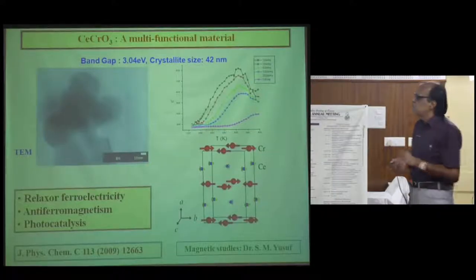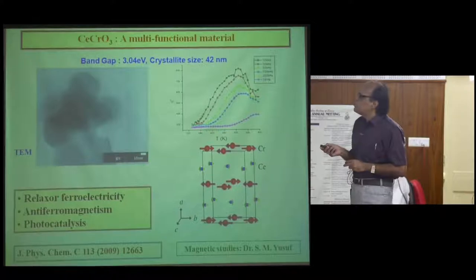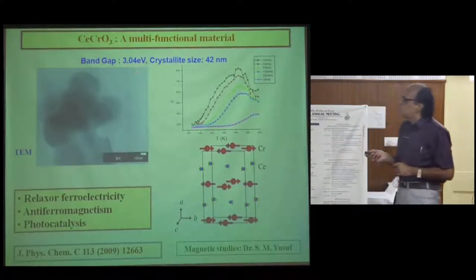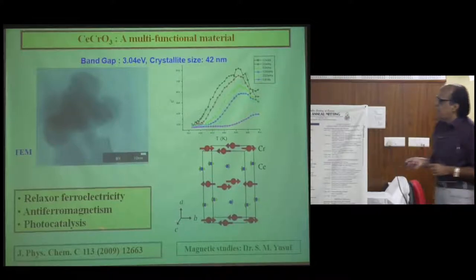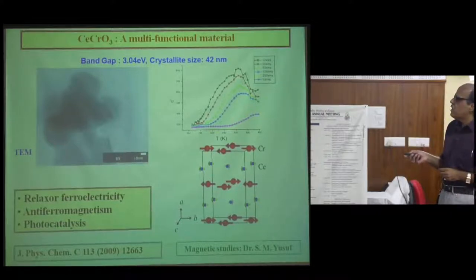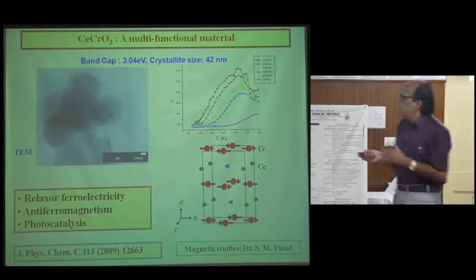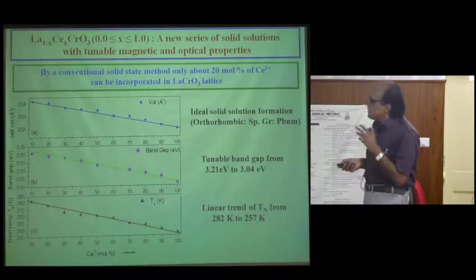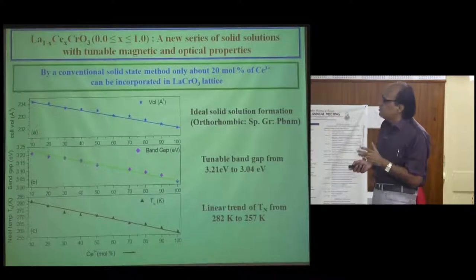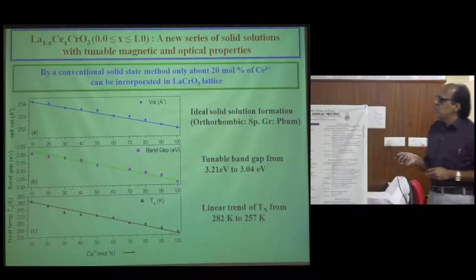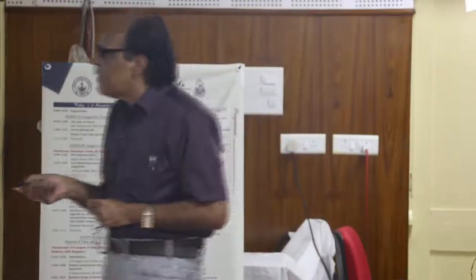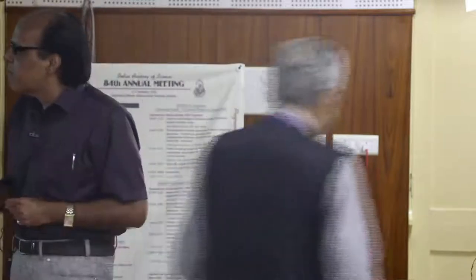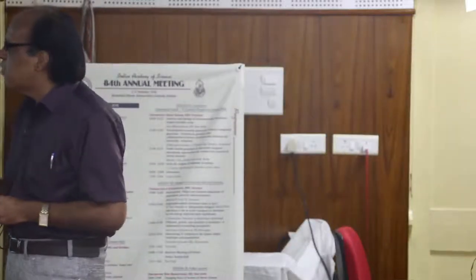We synthesized CeCrO3, which turned out to be a truly multifunctional material. Its band gap is 3.04 eV. It was used by us for efficient photocatalysis, it shows antiferromagnetic behavior, and it also shows relaxor ferroelectricity, as seen from the dielectric constant versus temperature curve. Having succeeded in making this new compound CeCrO3, we made an entire new series with composition La(1-x)CexCrO3. Here you can see the tailoring of band gap — it can be fine-tuned from 3.21 to 3.04 eV.